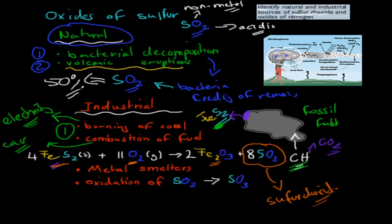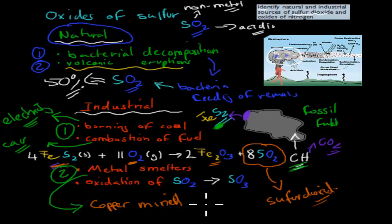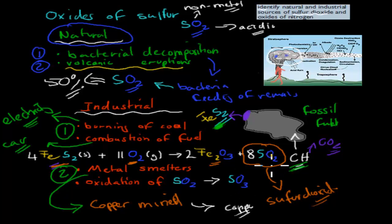Another way we can industrially produce sulfur dioxide is through metal smelters. This involves having a copper mineral that is not pure copper. We smelt that in a high-temperature furnace to produce copper, but as a by-product we also produce sulfur dioxide. So the two industrial sources are: the burning of coal and combustion of fuel, and using metal smelters — which is essentially making metal itself.